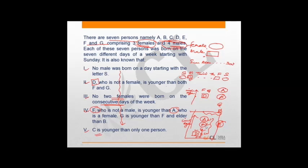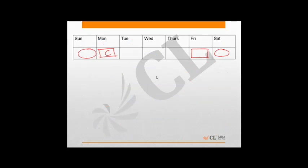A is definitely the person born on Sunday. F cannot be born on Saturday because there are three people younger than F. F must be placed where three more people can fit to its right, so F can be born on either Tuesday or Wednesday. This means we're going to have cases.